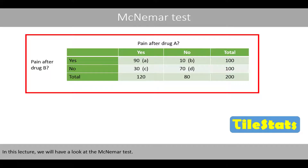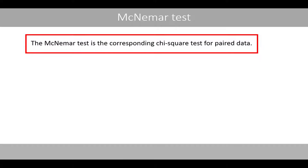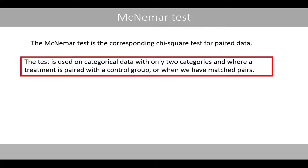In this lecture, we have a look at the McNemar test. The McNemar test is the corresponding chi-square test for paired data. The test is used on categorical data with only two categories, and where a treatment is paired with a control group, or when we have matched pairs.